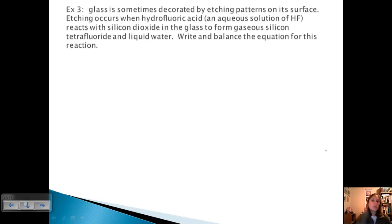Okay, we also talked about just using inspection. And once you get more familiar with balancing, sometimes you don't have to go through the whole writing process and you can kind of just look at it. And that makes things go a lot faster. All right, so glass is sometimes decorated by etching patterns on its surface. Etching occurs when hydrofluoric acid - so HF and it's aqueous, most acids are - reacts with silicon dioxide. That is a type 3, and it's in the glass, so that's got to be solid. To form gaseous silicon tetrafluoride, so silicon F4, it's a gas, and liquid water.